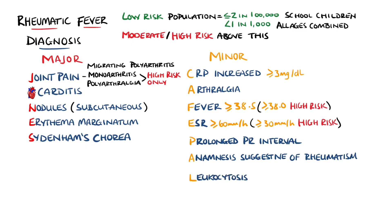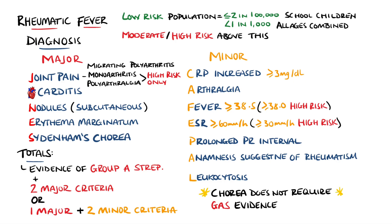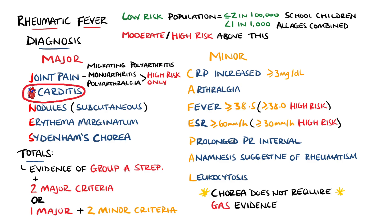L is for leukocytosis, but bear in mind that leukocytosis is not used in the Jones criteria itself, but is used by the World Health Organization. Overall, evidence of group A strep infection with two major criteria, or one major and two minor criteria, are required. Note, however, that chorea does not need evidence of a prior group A strep infection, and that if joint involvement meets the major criteria, arthralgia in the minor criteria cannot be counted. Similarly, if a patient has carditis as a major criterion, then a prolonged PR interval no longer counts as a minor one.